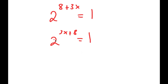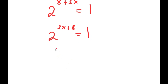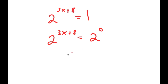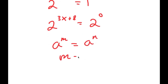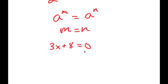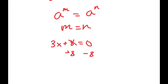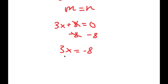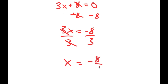Now, 2 to the power of what number equals 1? That's 2 to the power of 0. So I can write 2 to the power of 3x plus 8 is equal to 2 to the power of 0. Since the bases are the same, the exponents must be equal: 3x plus 8 equals 0. All I have to do is subtract 8 on both sides, so I get 3x equals negative 8. Dividing both sides by 3, I get x is equal to negative 8 over 3.